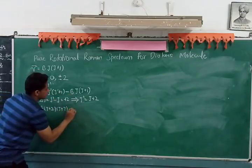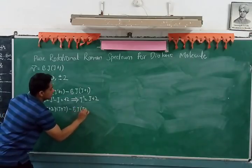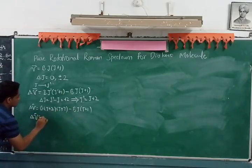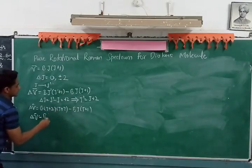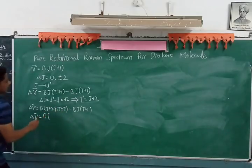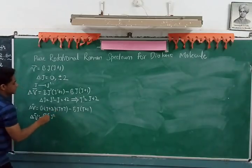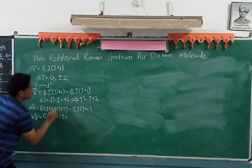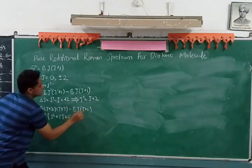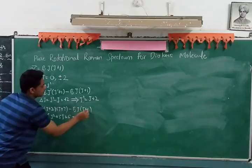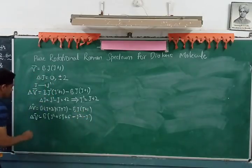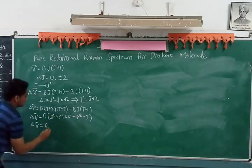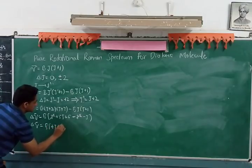Expanding and simplifying: δν̄ = B[(J+2)(J+3) − J(J+1)] = B[J² + 5J + 6 − J² − J] = B(4J + 6). So for ΔJ = +2, δν̄ = B(4J + 6). This is equation 2.